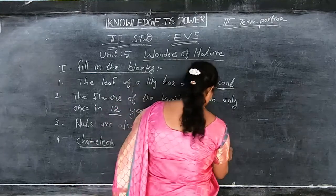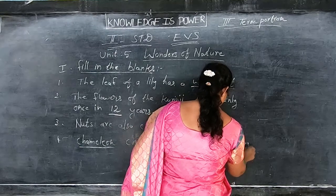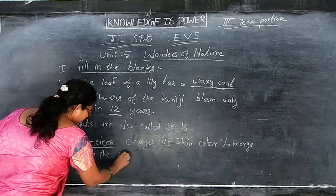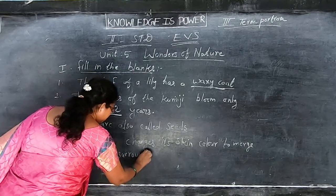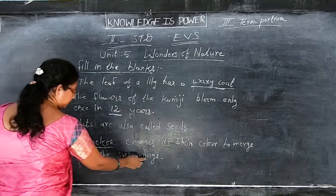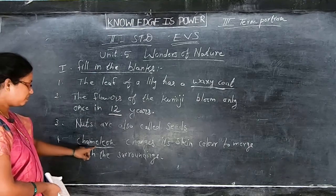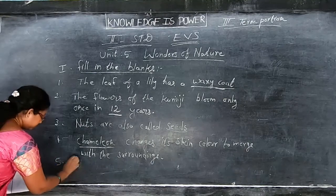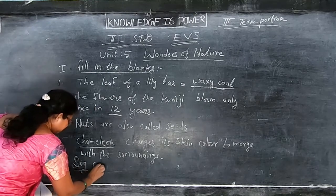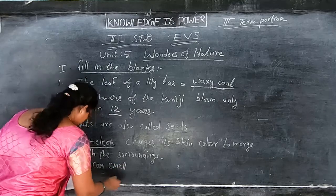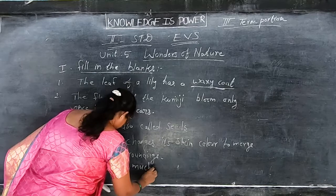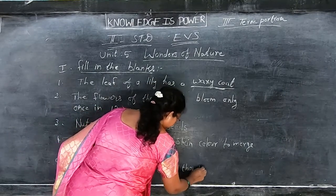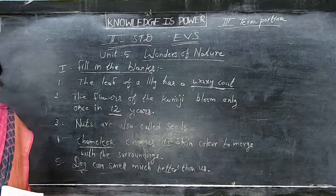Surroundings — S-U-R-R-O-U-N-D-I-N-G-S. Chameleon — C-H-A-M-E-L-E-O-N. Dog can smell — D-O-G, S-M-E-L-L — much better. Answer is dog. Take your classwork and write, children.